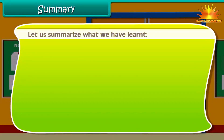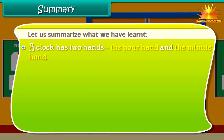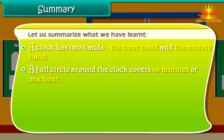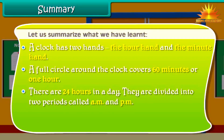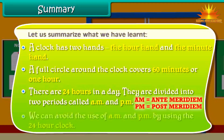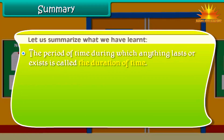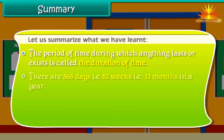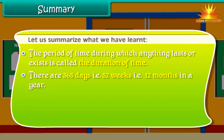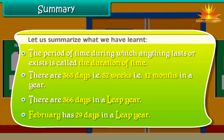Let us summarize what we have learned. A clock has two hands: the hour hand and the minute hand. A full circle around the clock covers 60 minutes or 1 hour. There are 24 hours in a day, divided into two periods called AM and PM. We can avoid the use of AM and PM by using the 24-hour clock. The period of time during which anything lasts or exists is called the duration of time. There are 365 days, that is 52 weeks, that is 12 months in a year. There are 366 days in a leap year, and February has 29 days in a leap year.